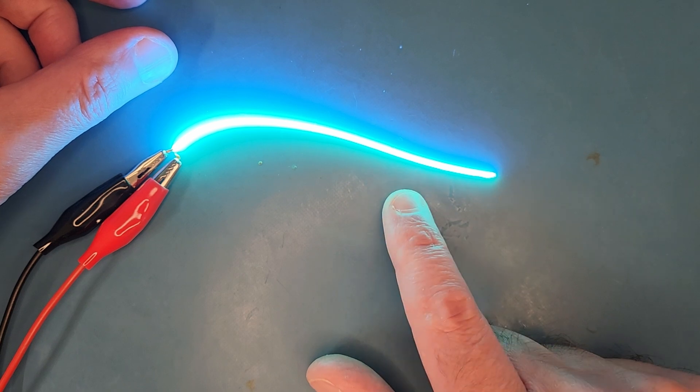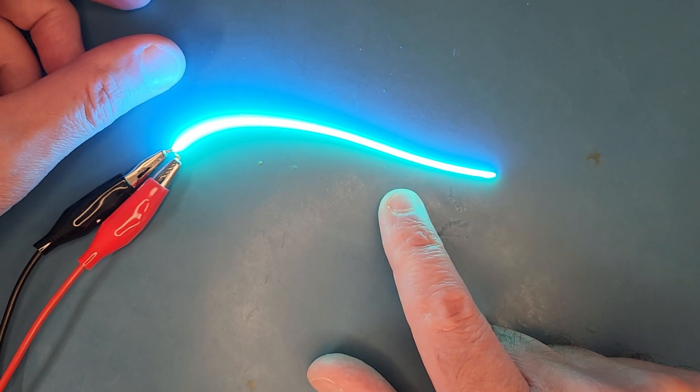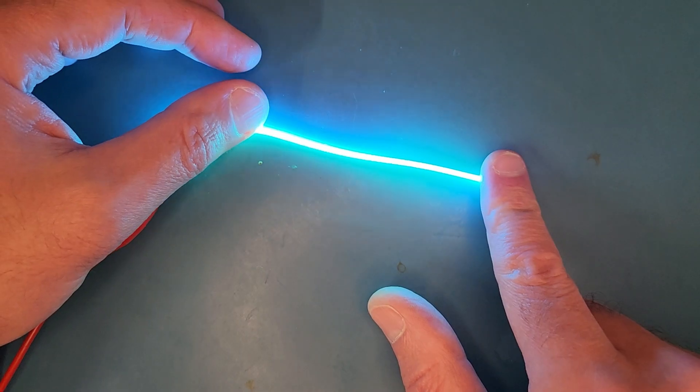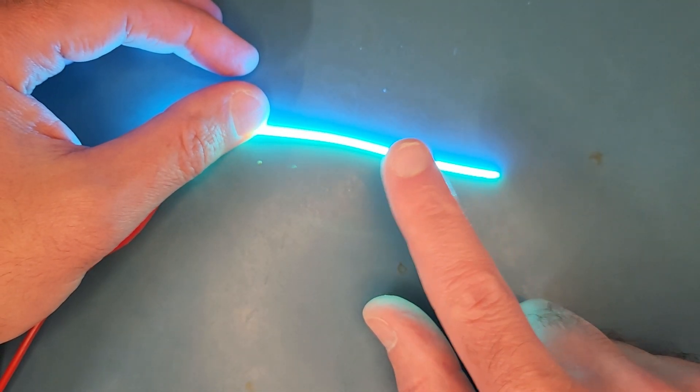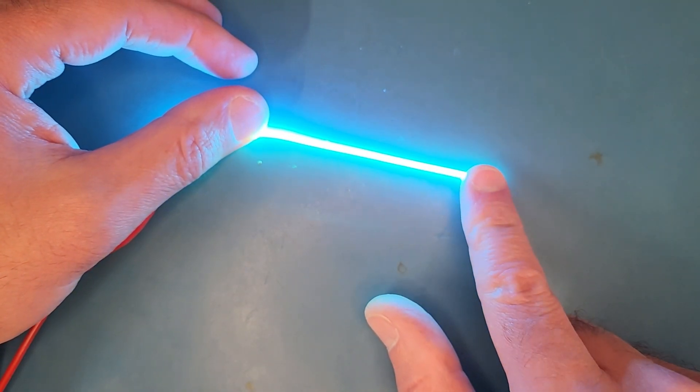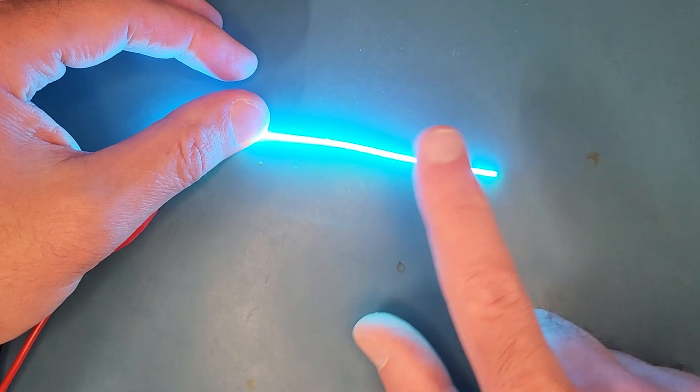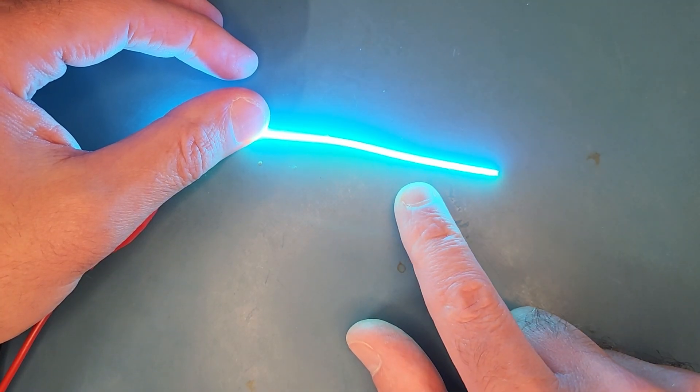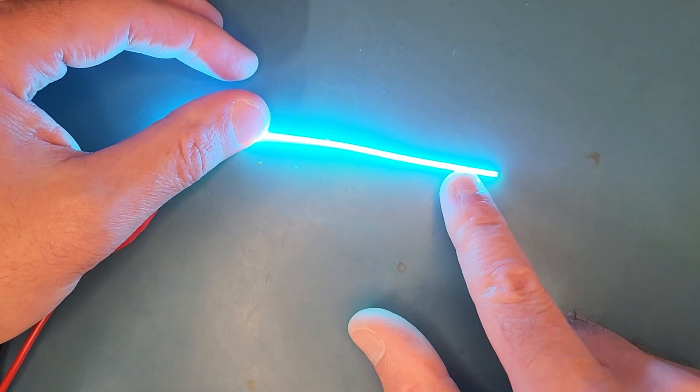The spec sheet says a max current of 300 milliamps. That seems quite high. What you see here on camera is about 100 milliamps. It's quite bright, even off camera. I'm not too sure what kind of benefit you would get by powering it with 300 milliamps.